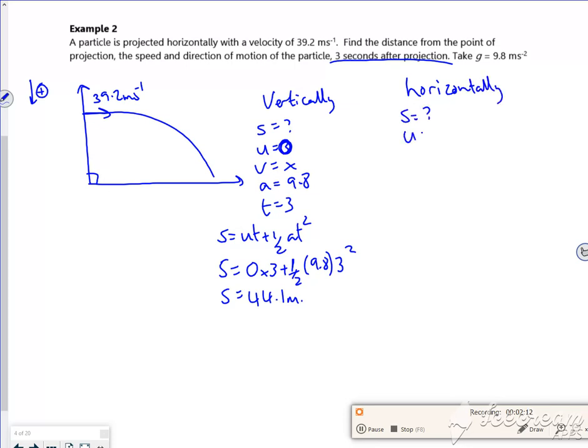And then let's look horizontally. So S I don't know, U is 39.2, V I don't know yet, A is 0, T is 3. So S equals UT plus half AT squared, but I know that that bit disappears. And we're calling it X equals UT, so 39.2 times 3. 117.6 meters.